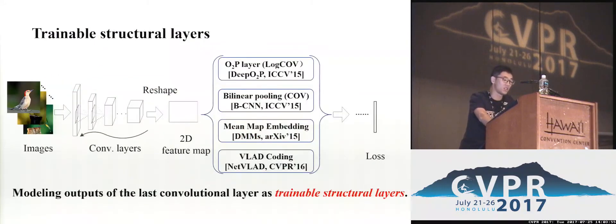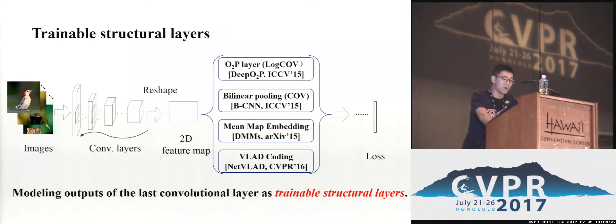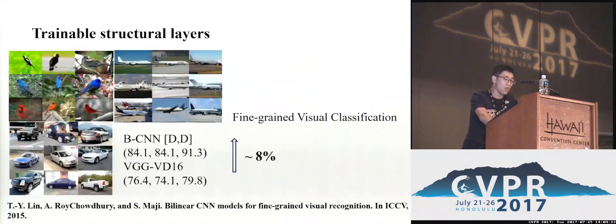Recently, researchers proposed to plug some trainable structure layers into deep CNN architectures. However, the outputs of the last convolutional layer are reshaped to a 2D feature map, discarding location information. Such layers are used to model these features with classical methods, such as covariance matrices, mean embedding, and VLAD coding.